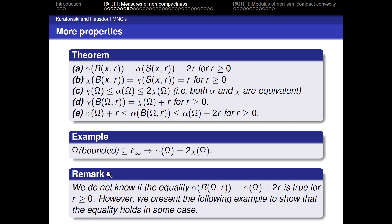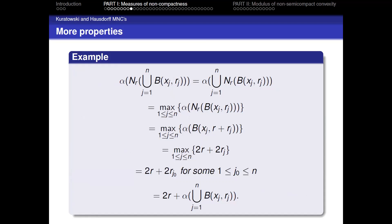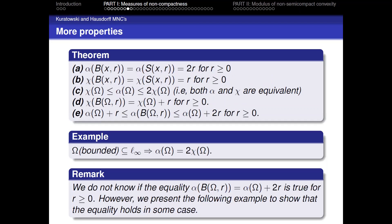On the other hand, we don't know whether α(B(Ω, r)) equals α(Ω) + 2r in general. However, we present the following example to show that the equality holds in some cases: α of the r-neighborhood of a finite union of balls equals 2r plus α of that finite union. But in general, we don't know whether this equality is always satisfied.